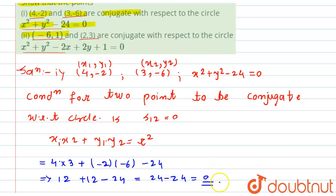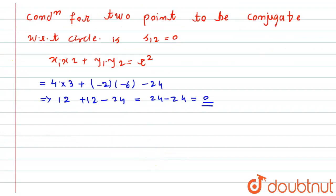This implies 12 plus 12 minus 24. This equals 24 - 24. This equals 0. Now we are getting here the answer as 0. This implies that these two points are conjugate to each other.